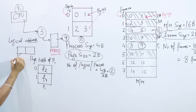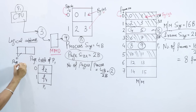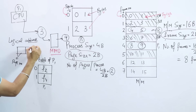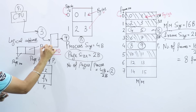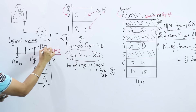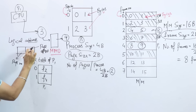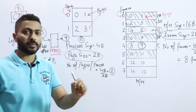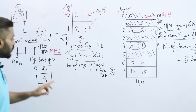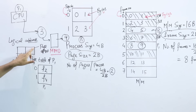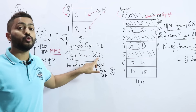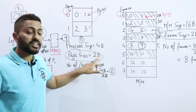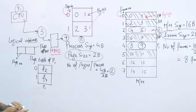CPU always works on logical addresses. A logical address is basically made up of two things: one is the page number, and another is the page offset — which represents the size of the page. The page size is 2 bytes.